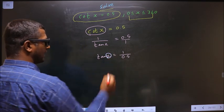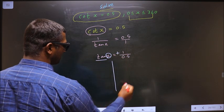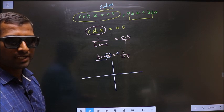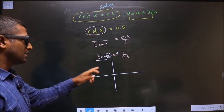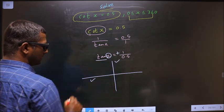Now to get the values for x, here I have tan and here it is positive. So now I should check in what all quadrants is tan positive. It is all silver tea cups. So tan is positive in the first and in the third.